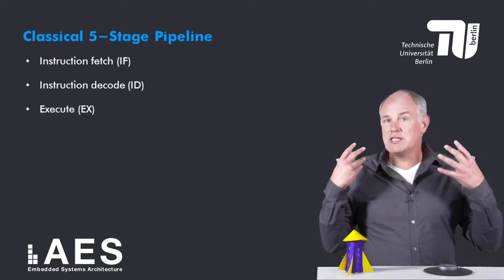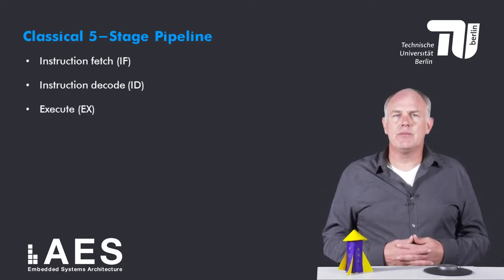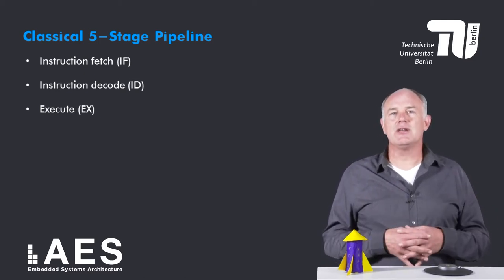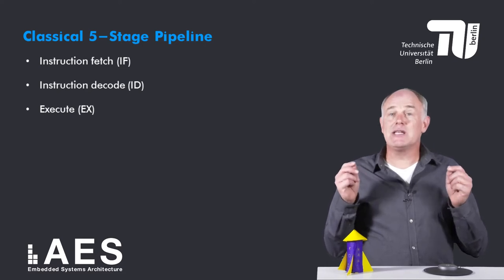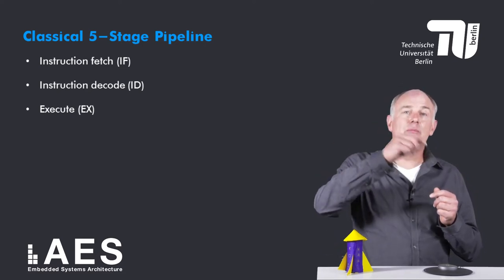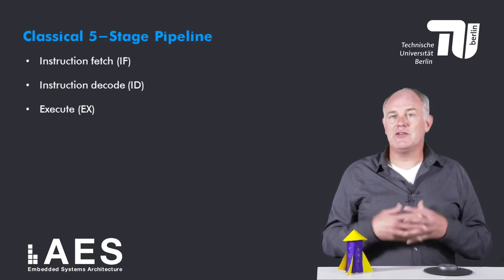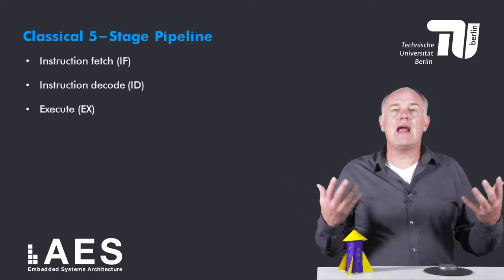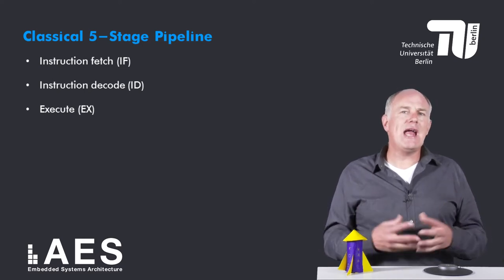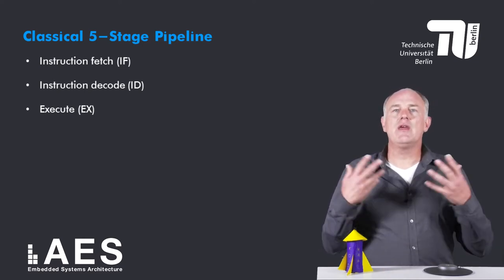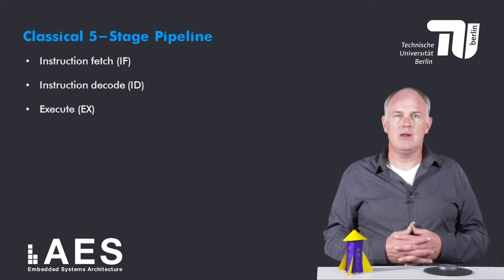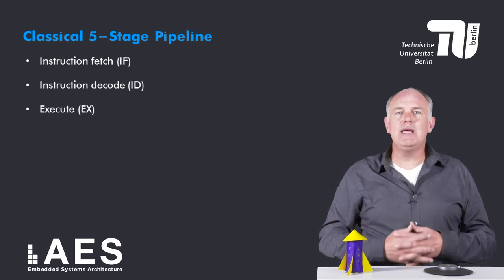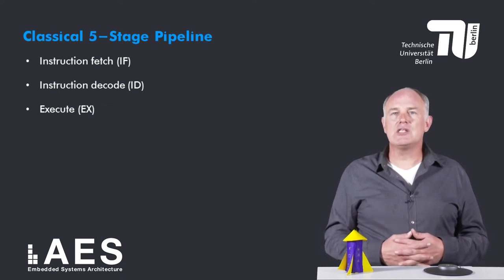The third stage is the execute stage. The operation that takes place depends on the instruction, which is possible because the instruction has been decoded in the previous stage. R-type instructions such as add, subtract, but also logical operations such as OR are executed. For memory accesses, loads and stores, the effective address is computed. This consists of adding the base register RS to the 16-bit immediate offset encoded in the instruction.